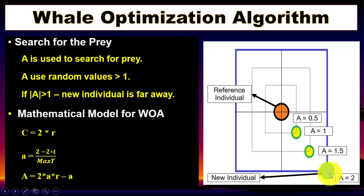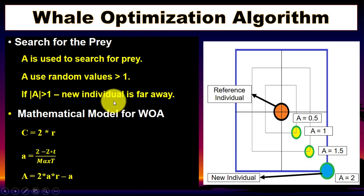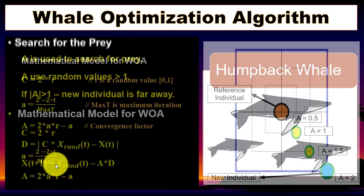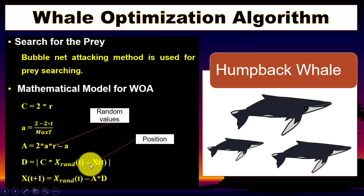Here we have the reference individual and the new individual, and you can see the value of A updated. If the value of A is greater than 1, it means the new individual is far away — we use this to search for the prey. A and C are the coefficient vectors, r is the random value, t is the current iteration, and max_t is the maximum iteration. D is the distance vector, X is the position, and r contains the random values used for searching.